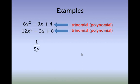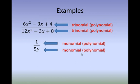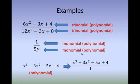1 over 5Y — we have a monomial in the numerator and another monomial in the denominator. So, monomial over monomial is a rational expression. Consider the polynomial X cubed minus 3X squared minus 5X plus 4. We can rewrite this one as a polynomial over a constant, which is again a polynomial over a monomial, which is a rational expression. So these are examples of rational expressions.